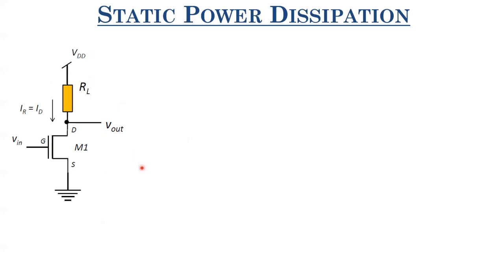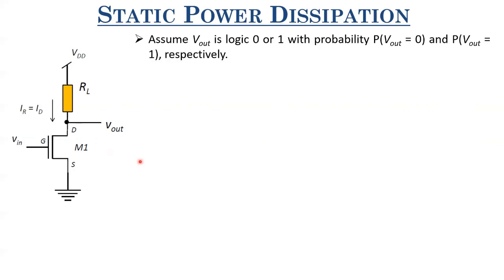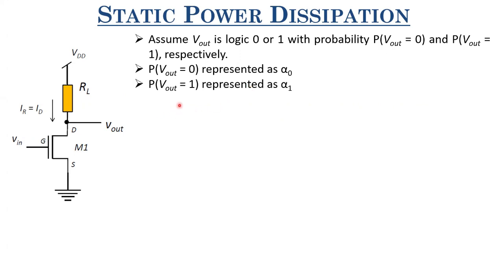To analyze static power dissipation, we need to know what fraction of time the output is in logic zero state, and what fraction of time it is in logic one state. If the static power dissipation differs between output logic zero and logic one, we need to know those fractions. We denote these as P(Vout = 0) and P(Vout = 1) respectively — or alpha zero and alpha one.